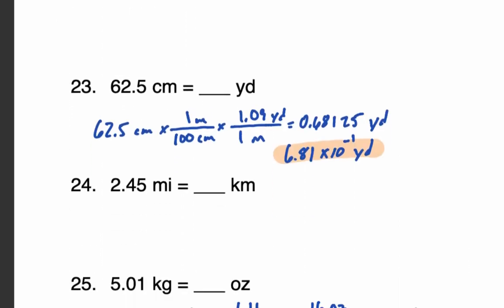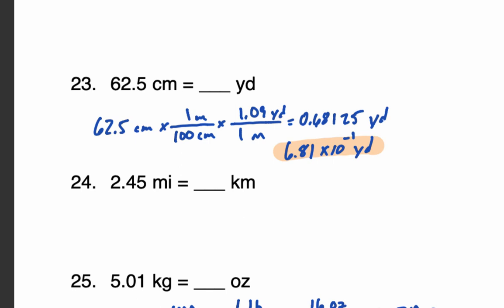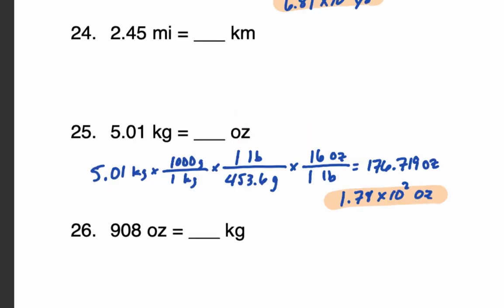In number 23, three significant digits gives us 6.81 times 10 to the negative second. In number 25, 5.01 has three significant digits and we need three in our final answer, so we get 1.78 times 10 to the second — actually, looking at it again, it should be 1.77.